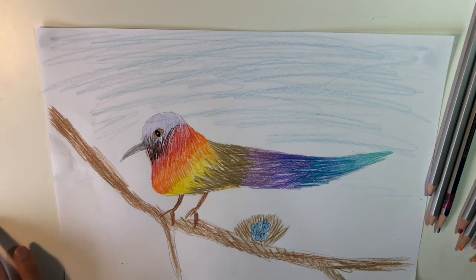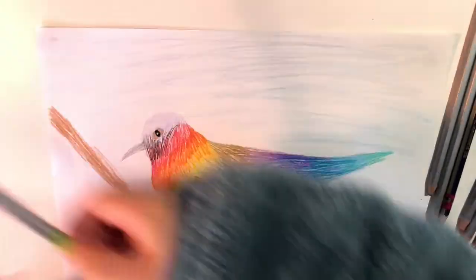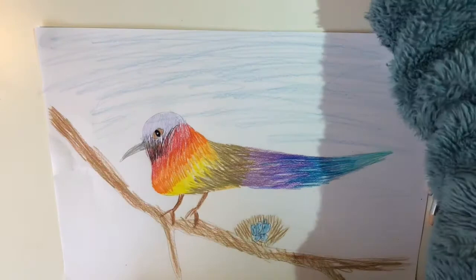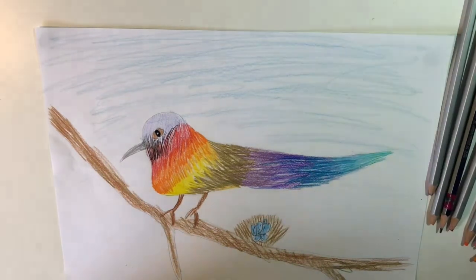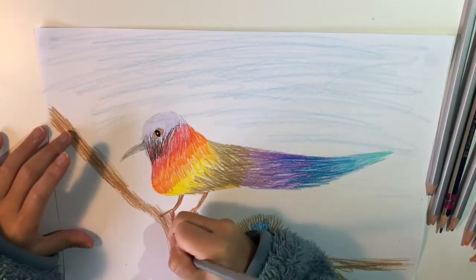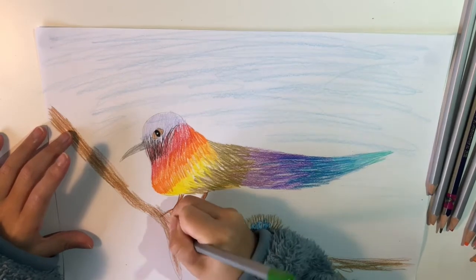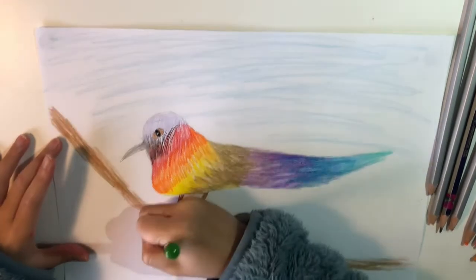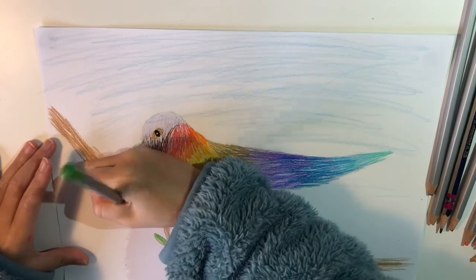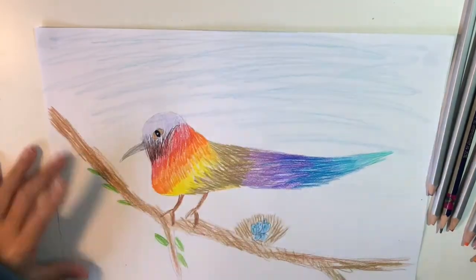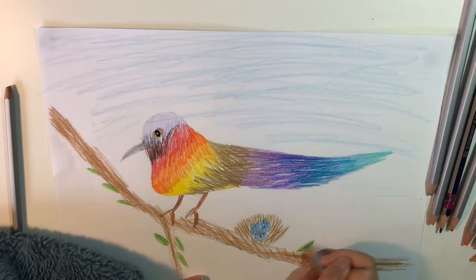You can add more detail by getting some green and getting some leaves on it like this. You can do different colors. For me, I'm just going to do the small leaves.